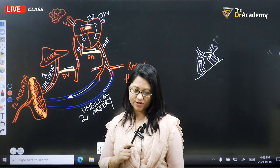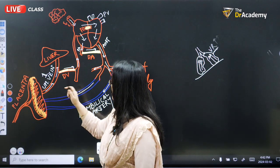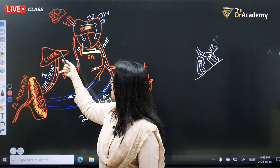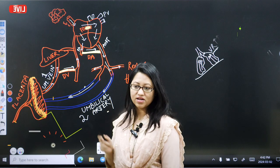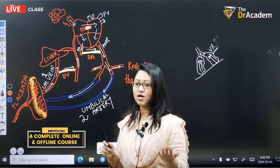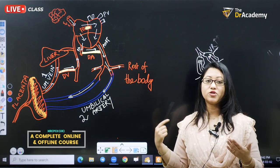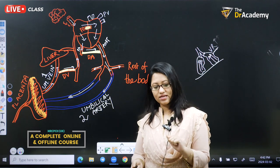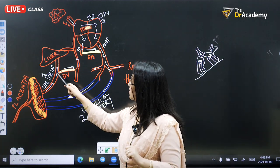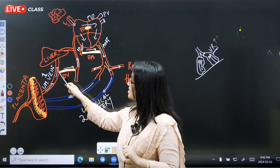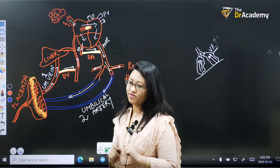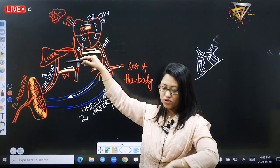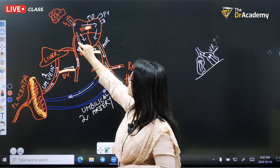Oxygenated blood from the mother comes via the placenta into the umbilical vein. Some blood from the umbilical vein goes to the liver, which is also connected with the inferior vena cava. In fetal circulation this is completely opposite to the adult — the vena cava carries oxygenated blood. The rest of the blood goes through the ductus venosus to the inferior vena cava.